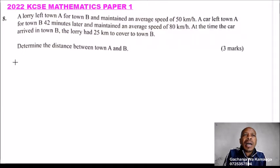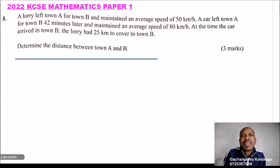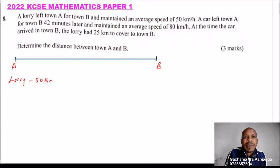Now we can use a line here to demonstrate that information. So we can say that is town A to B. This is A and this is town B. So we can say the Arodi speed was 50 km per hour. The car was 80 km per hour. The car started 42 minutes after Arodi had started the journey from A to B.